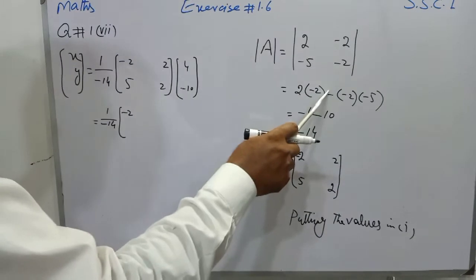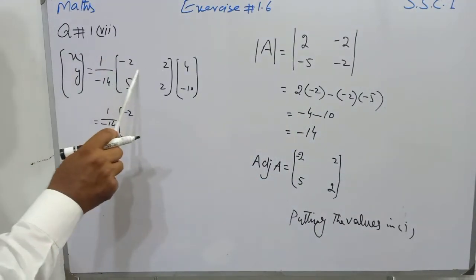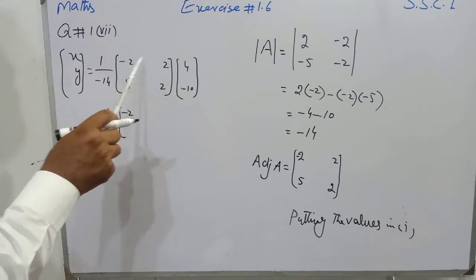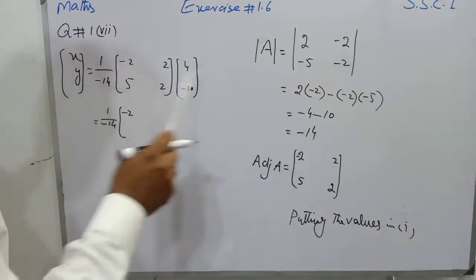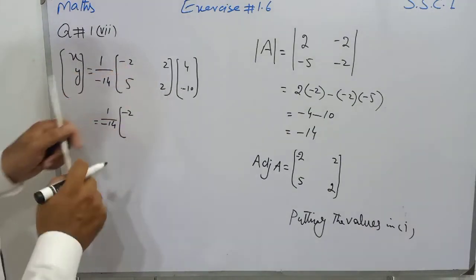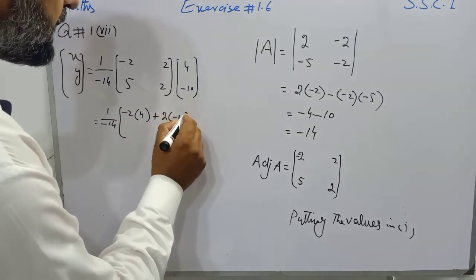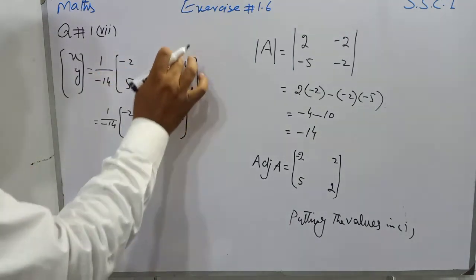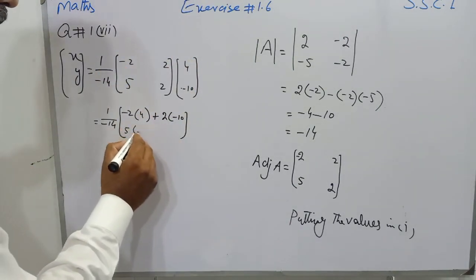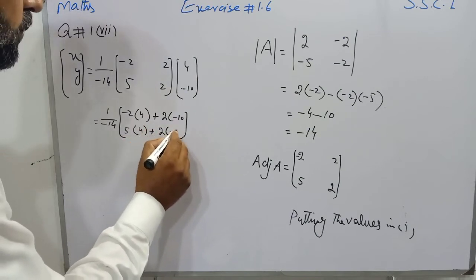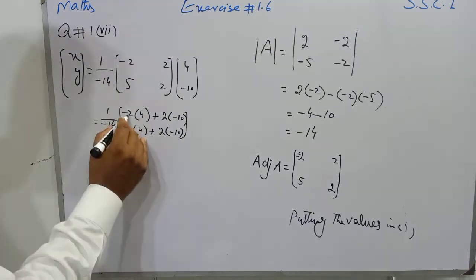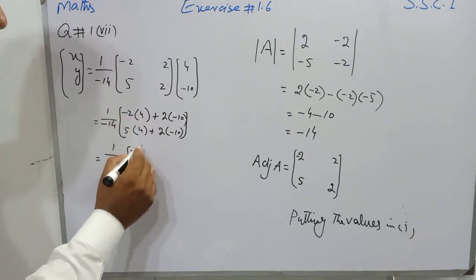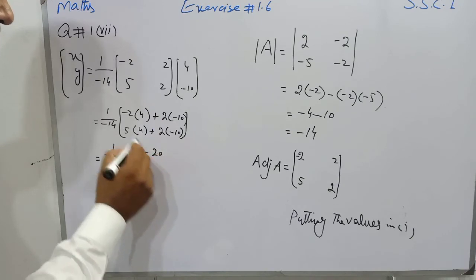When we move to the term, we have a plus sign; when we take the domain we use these two products which give a minus sign. When we multiply: first entry of first row with first entry of b, plus second entry of first row with second entry of b — so minus two multiplied by four, plus two multiplied by minus ten. Then for the second row: five into four plus two into minus ten. Now we simplify: one over minus fourteen, into minus eight plus minus twenty.